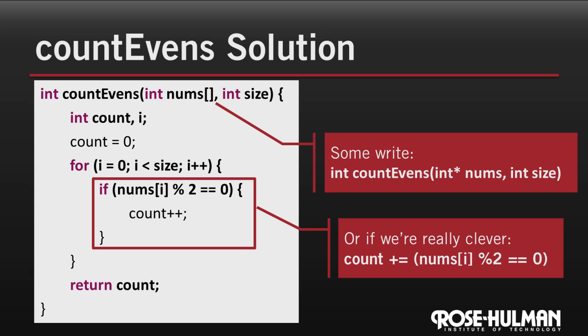One last point on passing arrays to functions before we wrap up. Under the covers, C passes arrays to functions by passing a pointer to the first element in the array. Some people take advantage of that and write their function headers like this. We encourage you to be explicit about array parameters, but I wanted you to see the alternative syntax so you'll recognize it when you see it.